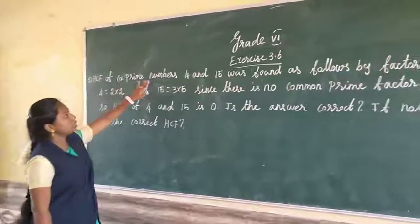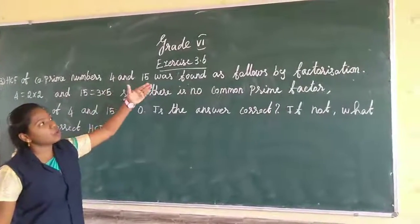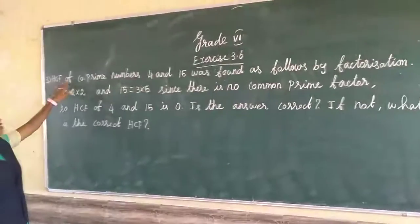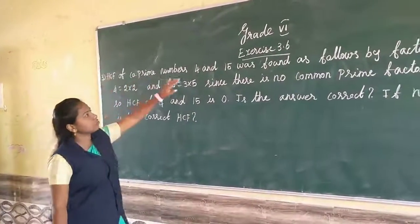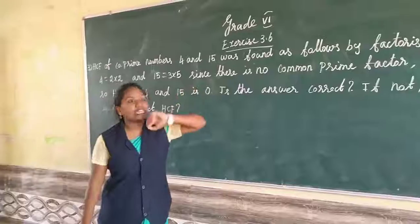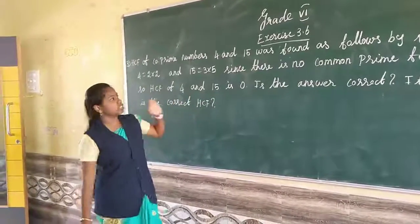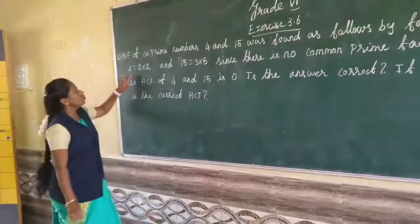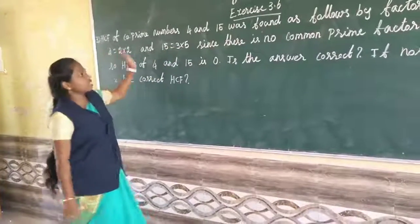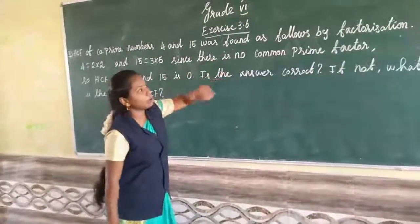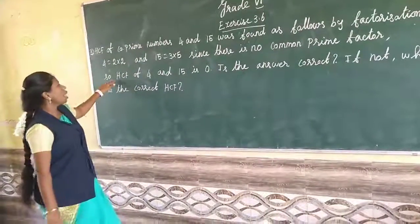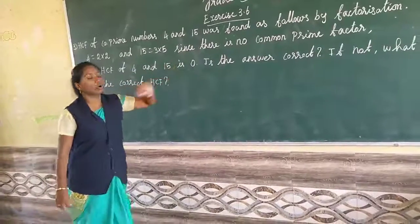Third one is to see what is four prime numbers 4 and 15 marked as follows by factorization. 4 equals 2 into 2 and 15 equals 3 into 5. Since there is no common prime factor, HCF of 4 and 15 is 0.